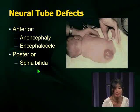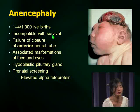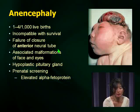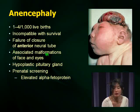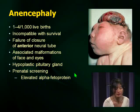Here's a picture of a meningocele and anencephaly. You're not going to be taking care of a lot of these babies because it's not compatible with life, but in the nursery it may be something you deal with. It's relatively common — 1 in 4,000 live births — and it is a failure of closure of the anterior neural tube. Remember that there are associated malformations of the face and eyes, and for prenatal diagnosis, alpha-fetoprotein is important.